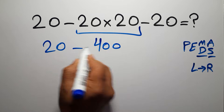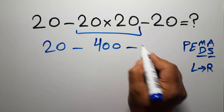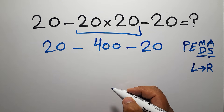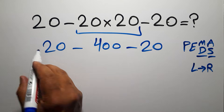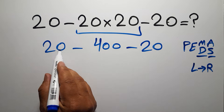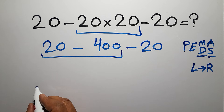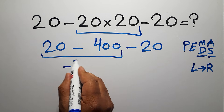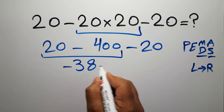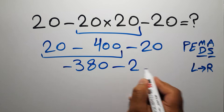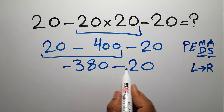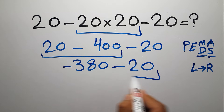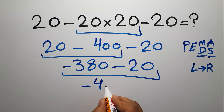So we have 20 minus 400 minus 20. Now we have two subtractions, and when we have more than one subtraction in an expression, we have to work from left to right. So first, 20 minus 400, which equals negative 380, and then minus 20. So we have negative 380 minus 20, which equals negative 400. And this is our final answer to this problem.